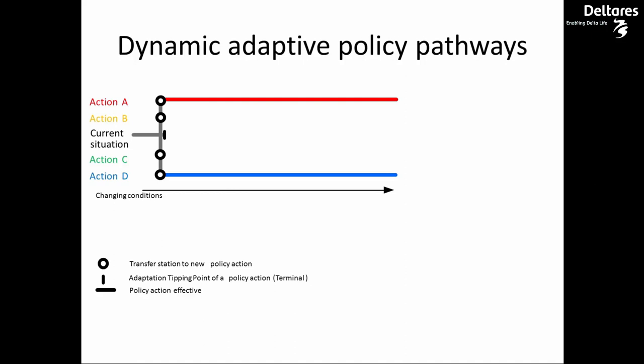Other options are short-term actions, like Action B. This could be, for example, the installation of booster pumps to improve drainage capacity. These actions are usually more easily implemented and they buy us time, but they don't typically have a very long shelf life. In this example, once Action B reaches its tipping point, it needs to be augmented by Action A or D.